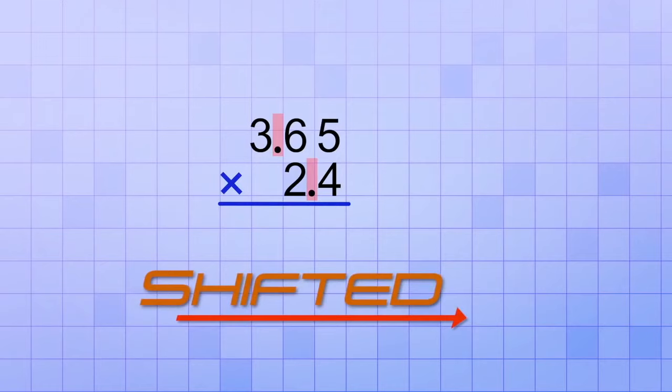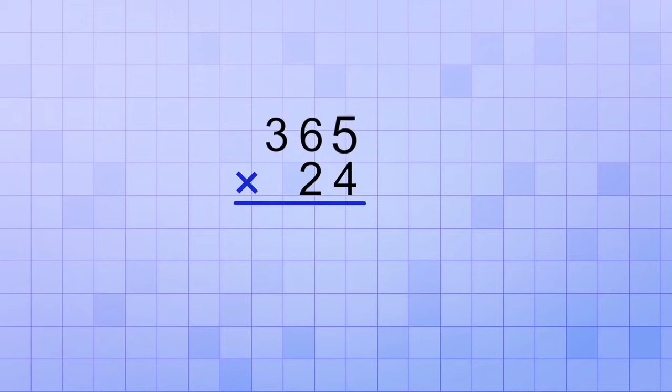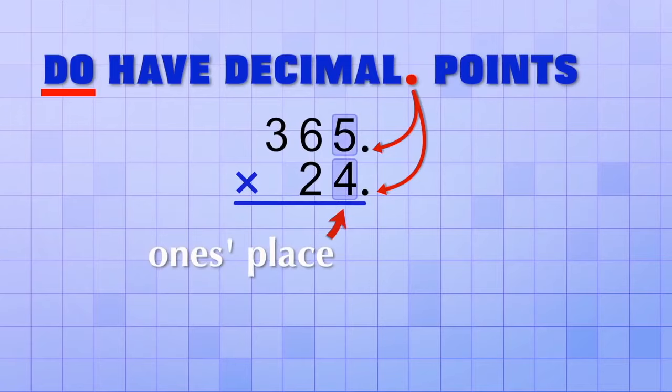Remember, the numbers 365 and 24 technically do have decimal points. They're right there next to the ones place. We just don't need to show them since there aren't any decimal digits.